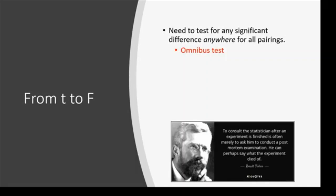We need a test which tells us there's a difference somewhere. Here's what's unique about the ANOVA: it is what's called an omnibus test. An omnibus test tells you there's a difference in here somewhere, but it can't do paired comparisons, so it can't tell you where. It just says there's a difference somewhere. This can be a hard concept to wrap your head around.